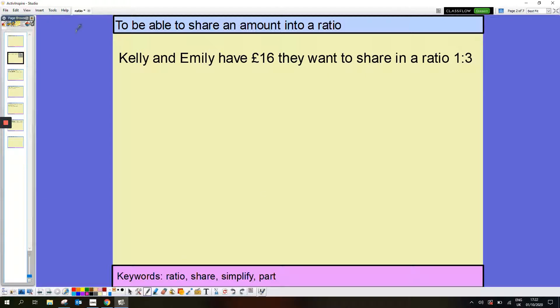There is a nice sort of 3-step way of doing this. My first job is to look at how many parts I've got in total. So by adding the ratio, I've got 4 parts that are shared between Kelly and Emily. My second step then is to share the £16 by that 4, which leaves me with £4 per part.